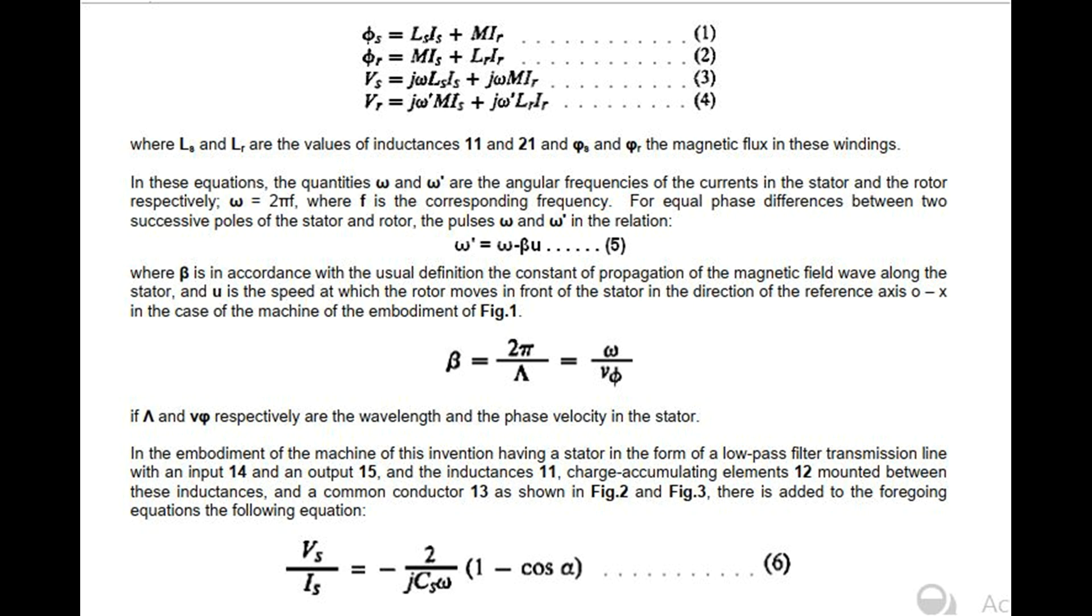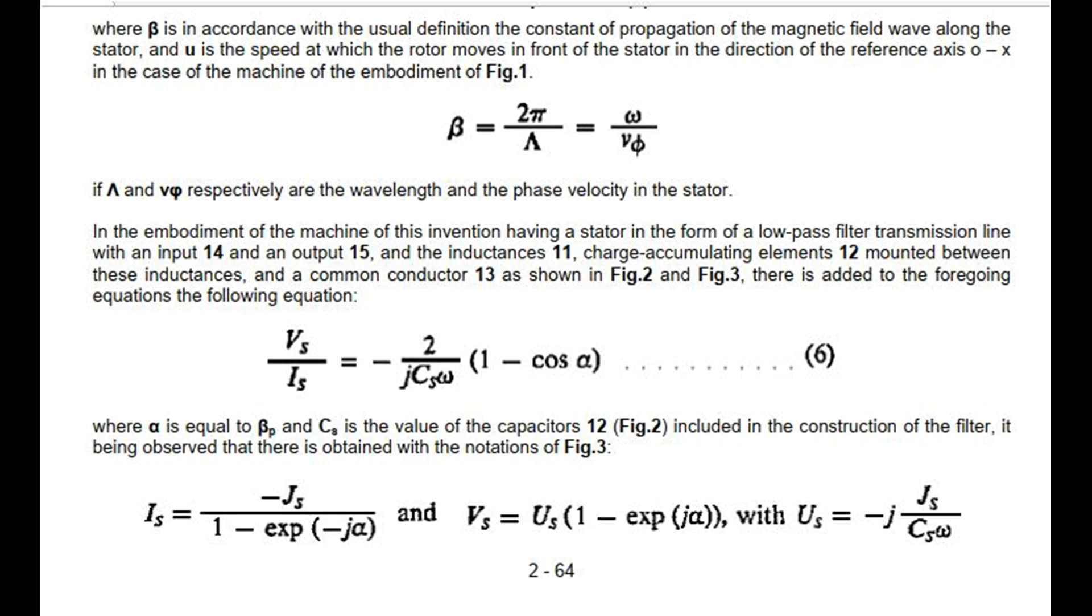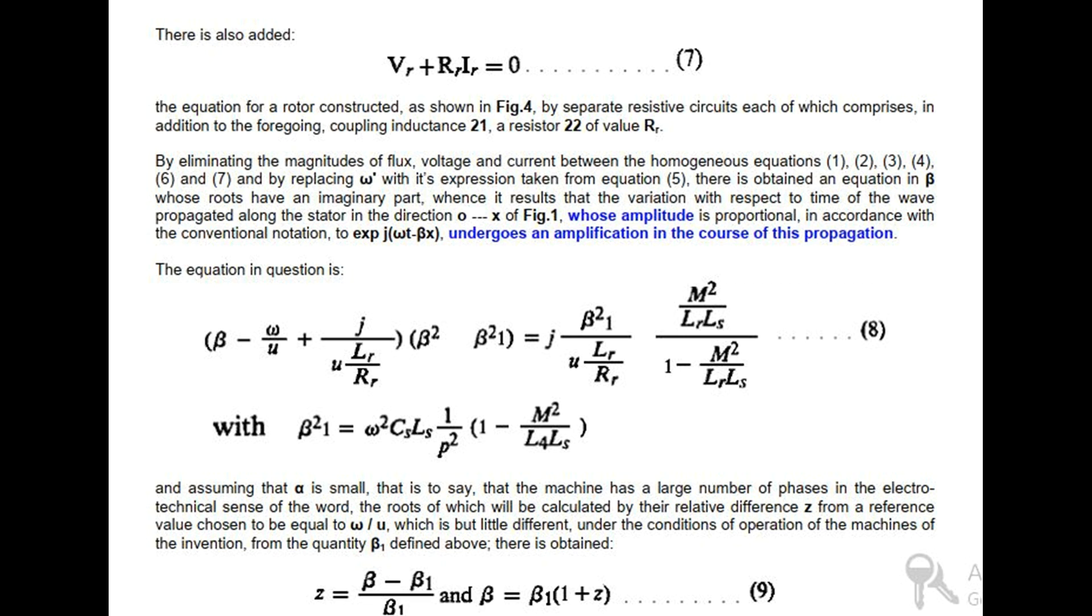In the case of the machine of the embodiment of Fig 1, beta = 2π/lambda and U = lambda·nu/P, where lambda and nu respectively are the wavelength and the phase velocity in the stator. In the embodiment of the machine of this invention having a stator in the form of a low-pass filter transmission line with an input 14 and an output 15, and the inductances 11, charge accumulating elements 12 mounted between these inductances and a common conductor 13 as shown in Fig 2 and Fig 3, there is added to the foregoing equations equation 6: Vs/Is = Z/(jCsω) (1 - cos α), where α is equal to βP and Cs is the value of the capacitors 12, Fig 2, included in the construction of the filter. It being observed that there is obtained with the notations of Fig 3: I1 = -Js/(1-exp(-jα)) and Vs = U1(1 - exp(jα)) with U1 = -j Z/(Csω).